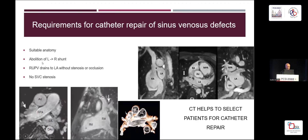What are the requirements for doing a catheter repair or putting a covered stent? Suitable anatomy is one. Whatever we put in the defect, we need to abolish the left-to-right shunt, maintain patency of the right upper pulmonary vein draining to the left atrium without occlusion or stenosis, and there should be no SVC stenosis. CT scanning in particular, and sometimes MRI, help us to select the right patients for repair.